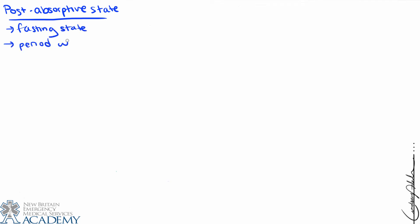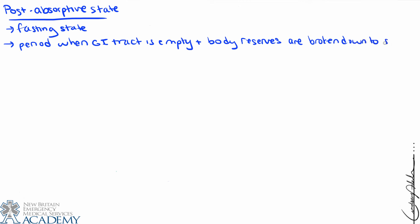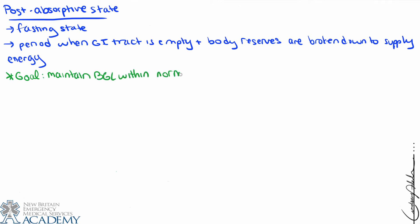The post-absorptive state, also called the fasting state, is the period when the GI tract is empty — perhaps four to six hours since the last meal — and body reserves are broken down to supply energy. Normal blood sugar is between 70 and 100 mg/dL, and we want to maintain that level regardless of circumstances — suppressing it when nutrients are flooding in from a meal, or sustaining it by breaking down reserves when it's been a while since eating.